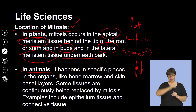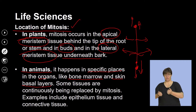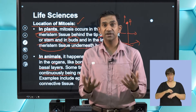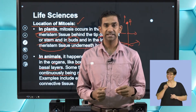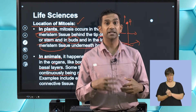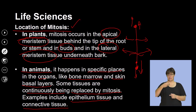In animals, mitosis happens in specific places such as the bone marrow cells and the skin basal layers, which are continuously produced. Some tissues are replaced continuously by mitosis — the classic example is the skin. Animals also molt and shed their external body covering, which is another example of where mitosis constantly occurs. Examples include epithelial tissue, connective tissue, bone, and blood cells.